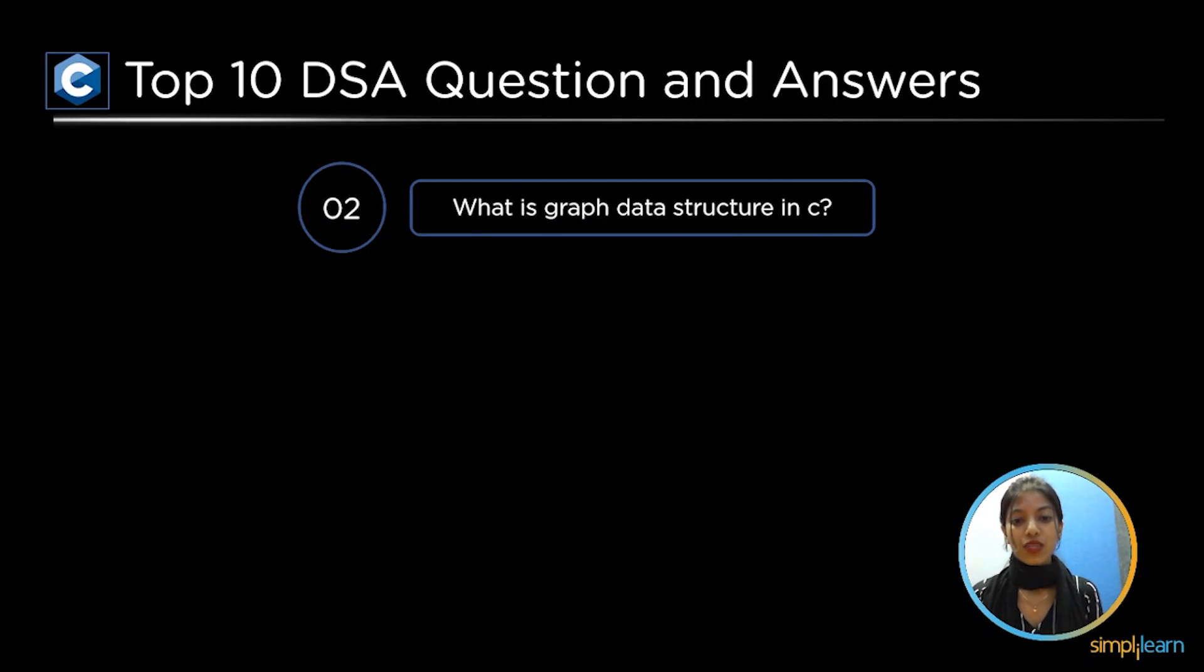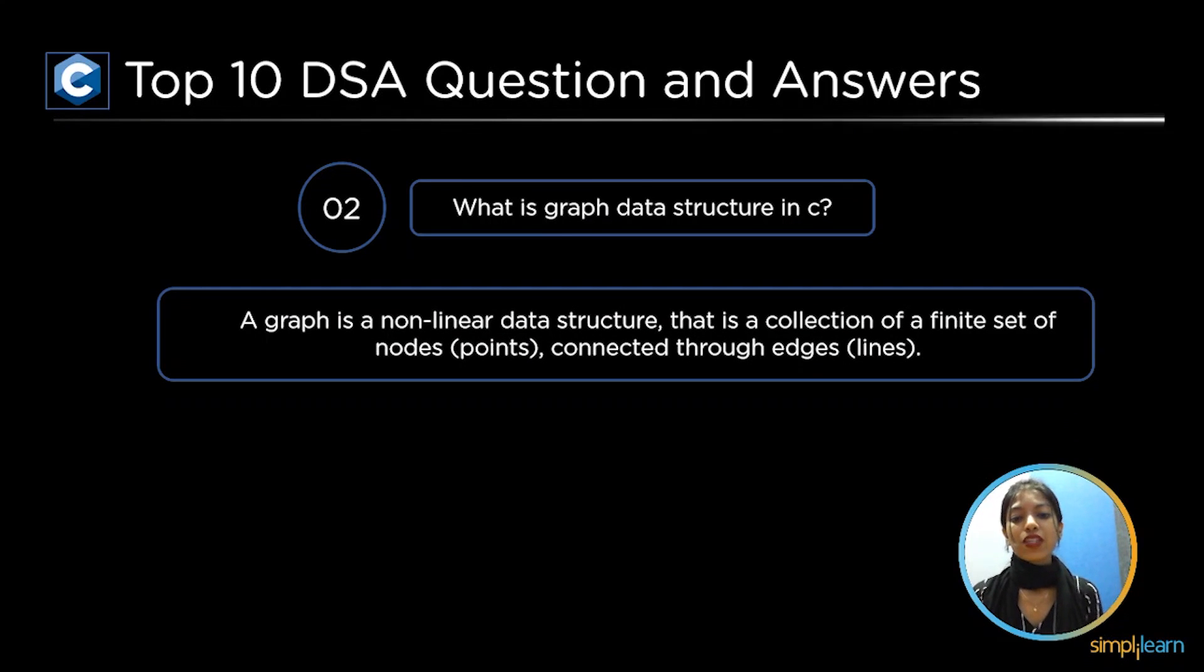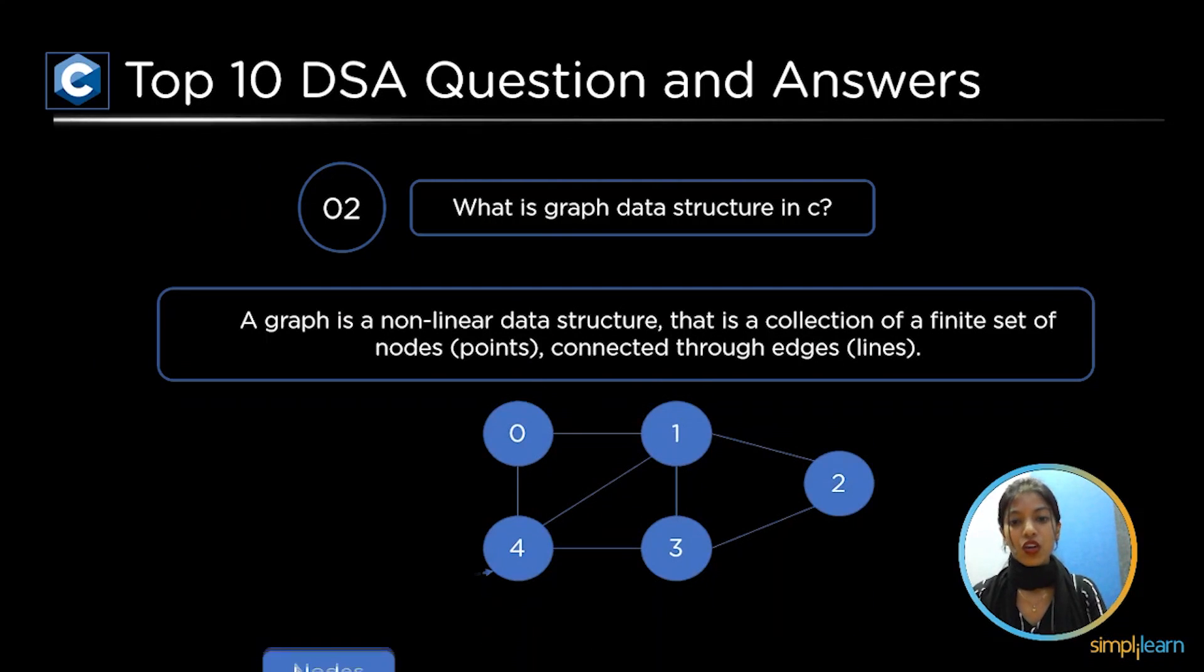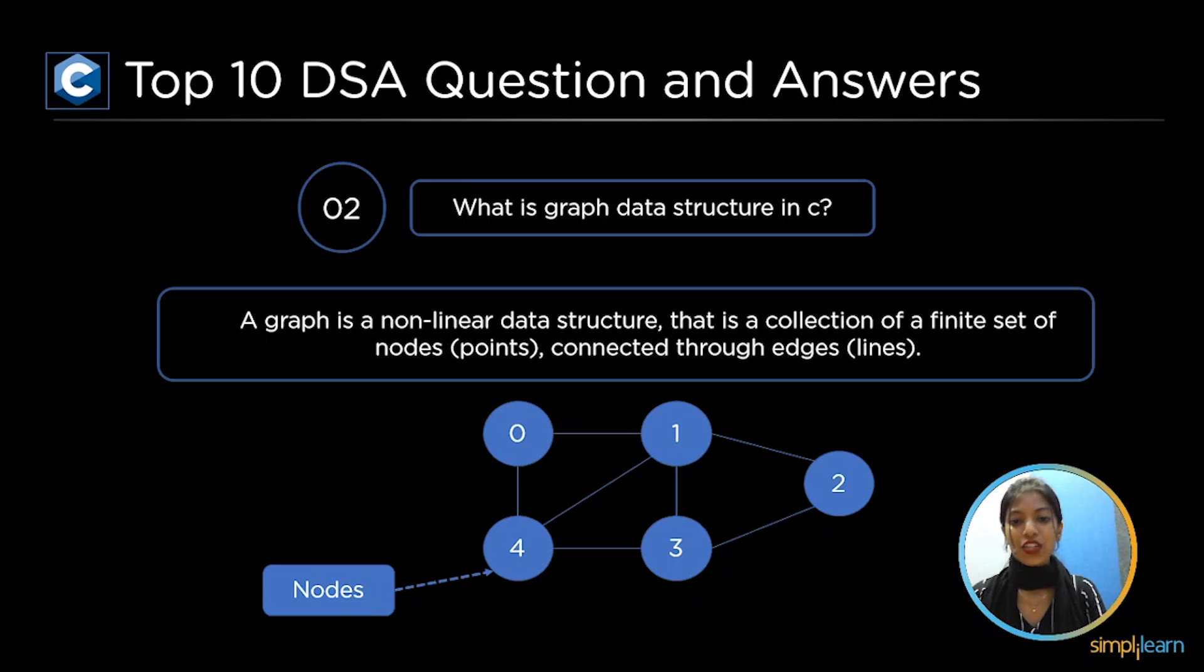The top second question is what is a graph data structure in C. A graph is a non-linear data structure. It is a collection of a finite set of nodes called points connected through edges called lines as shown in the below diagram. It must represent networks such as telephone networks, circuit networks, and social networks etc.